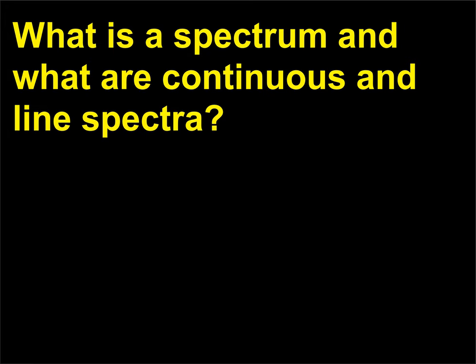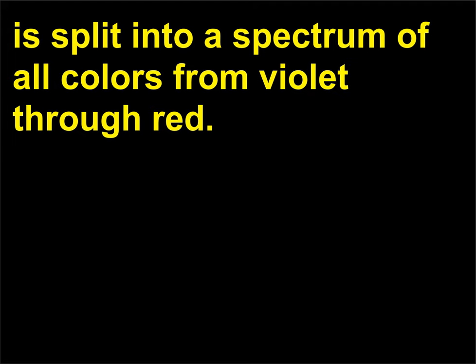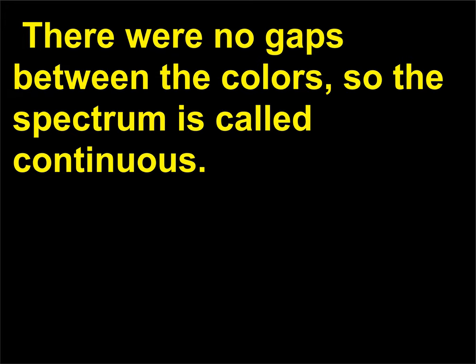What is a spectrum and what are continuous and line spectra? Newton showed that when white light is passed through a prism it is split into a spectrum of all colors from violet through red. There were no gaps between the colors, so the spectrum is called continuous.